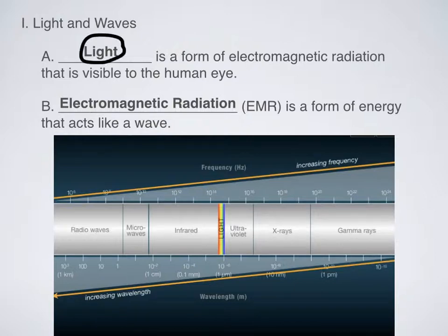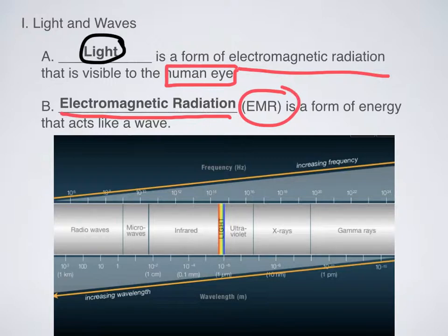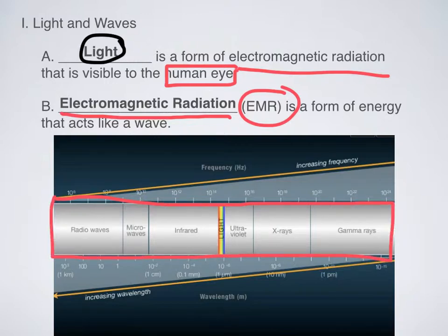The first thing we have to do is talk about what light actually is altogether. It's a form of electromagnetic radiation that is visible to the human eye — that's when we're talking about visible light, the type of light that we normally think about. What is electromagnetic radiation then? We're going to be abbreviating electromagnetic radiation as EMR. It's basically just a form of energy that acts like a wave. On your note packet, you should have a table that you're going to be filling in with the different types of electromagnetic radiation.